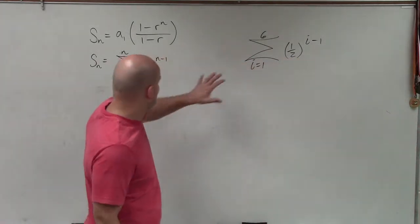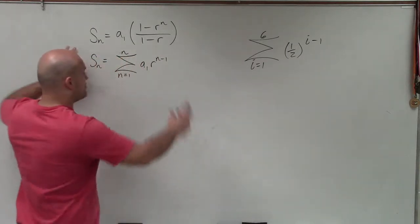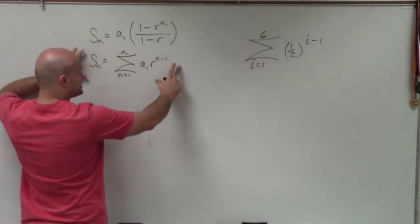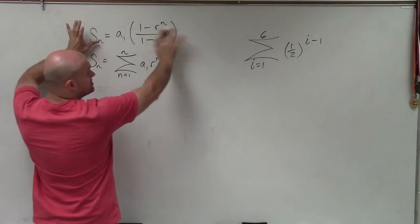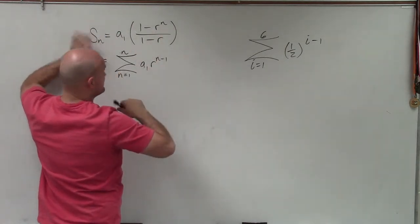And when looking at a geometric sequence, we see this as a sum notation. So we want to kind of revert to a standard sum notation to be able to identify all the parts that we're going to need to be able to find the sum.